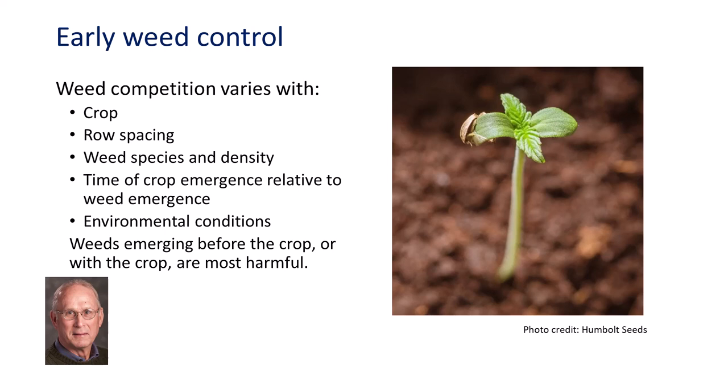Weed competition varies with the crop grown, row spacing, weed species, density, and the timing of weed emergence relative to crop emergence and environmental conditions. Weeds that emerge before or with the crop are the most competitive. The best time to uproot weeds is when they are very small, in the cotyledon or white thread stage, before they establish a root system.